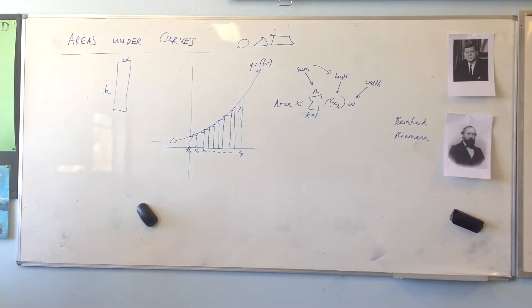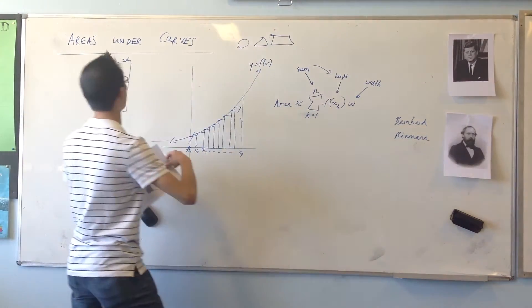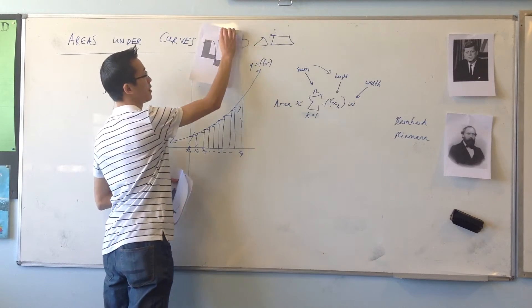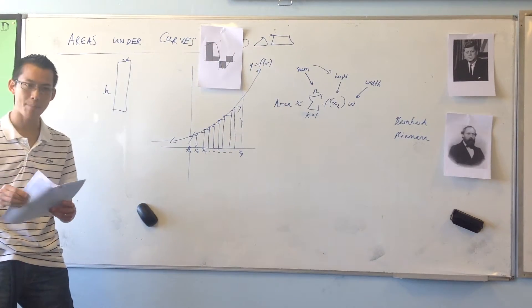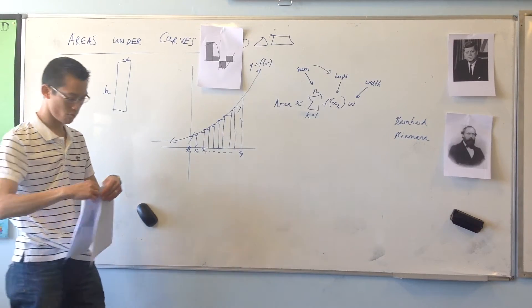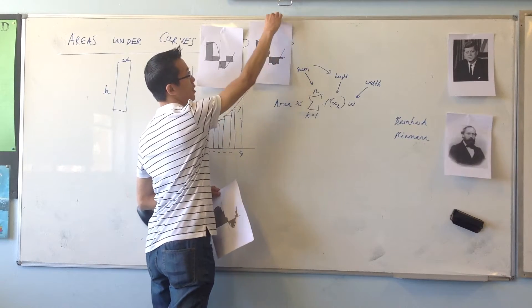So, how would you turn something that's approximate, like this, into something that's exact? You make an infinity. Yeah, you get more rectangles, right? So, instead of having something really broad and not detailed, like this, okay? What you do is consider what happens as n gets bigger, right? Or, if you like, what happens as w gets smaller.